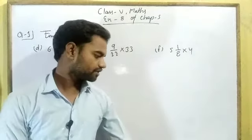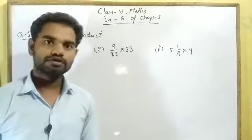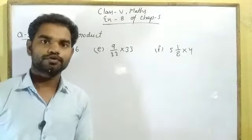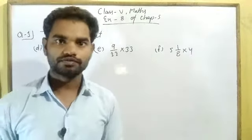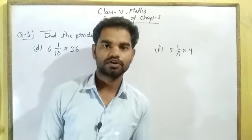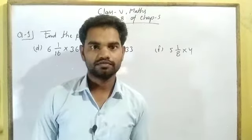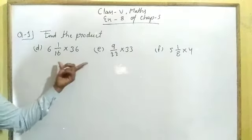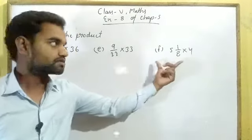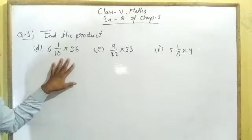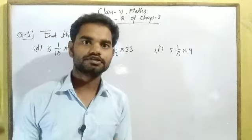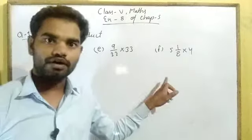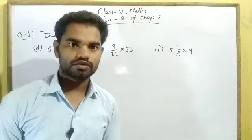In this exercise, our first question is: find the product and write the answer in the lowest form. Product means the result of multiplication. When we multiply two or more fractions or numbers, the result of multiplication is called product. In question number 1, there are 6 parts: A, B, C, D, E, F. Parts D, E, F are given here. Remaining 3 parts A, B, C you will solve by yourself.